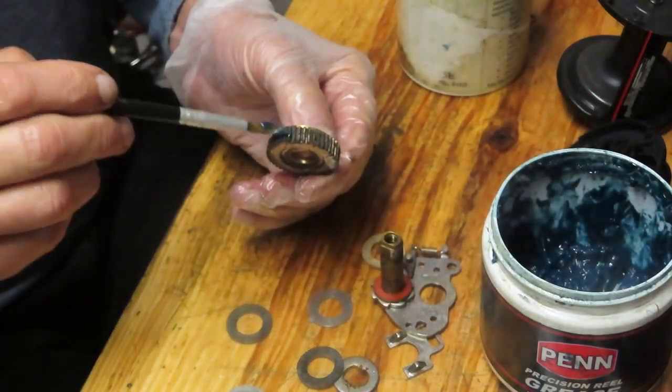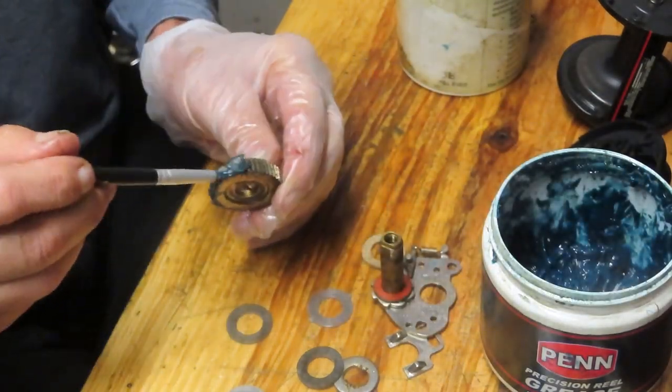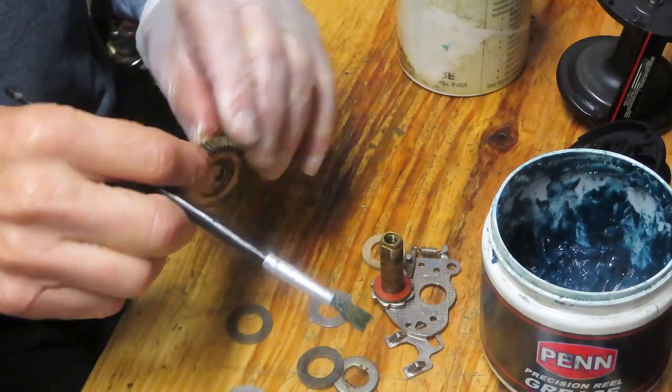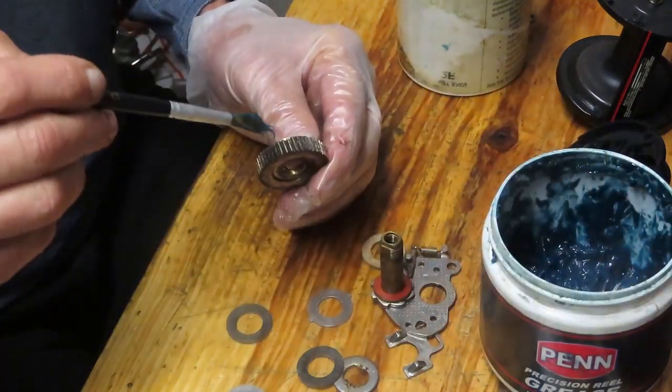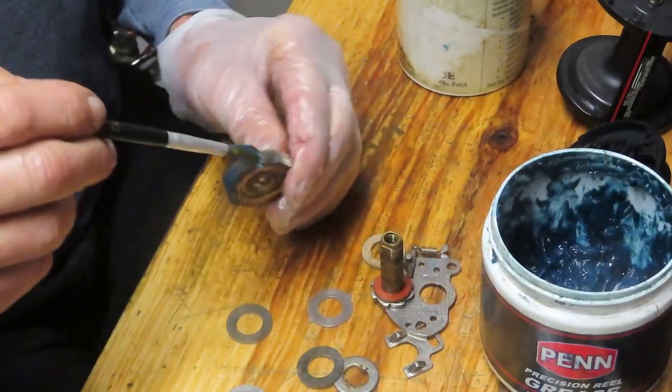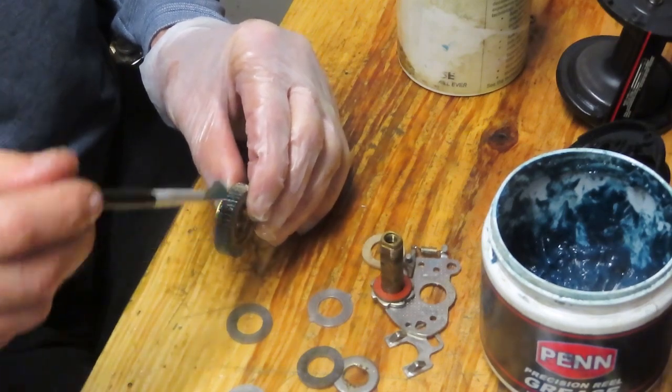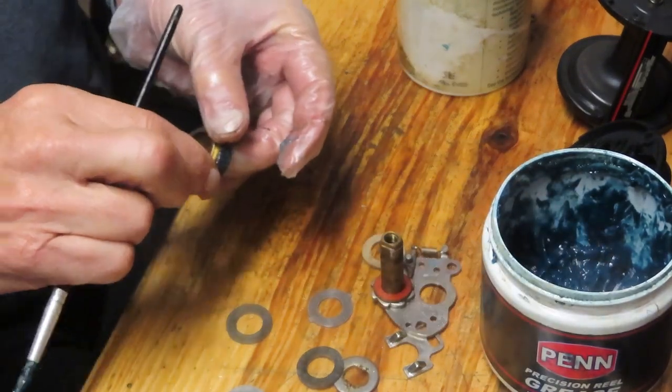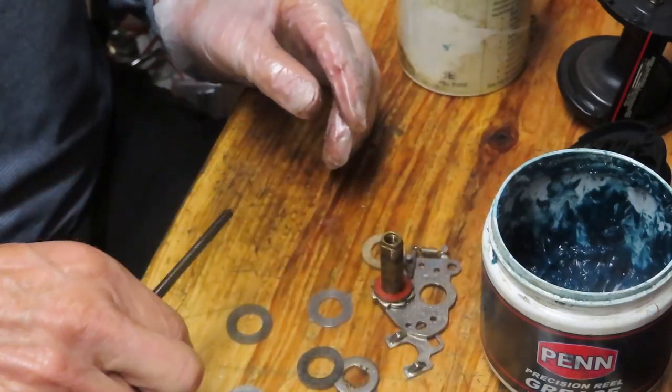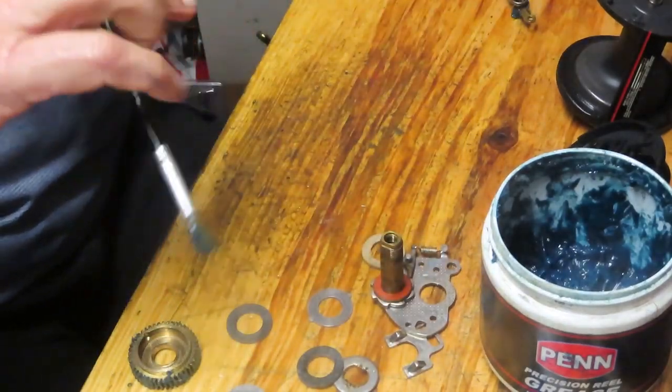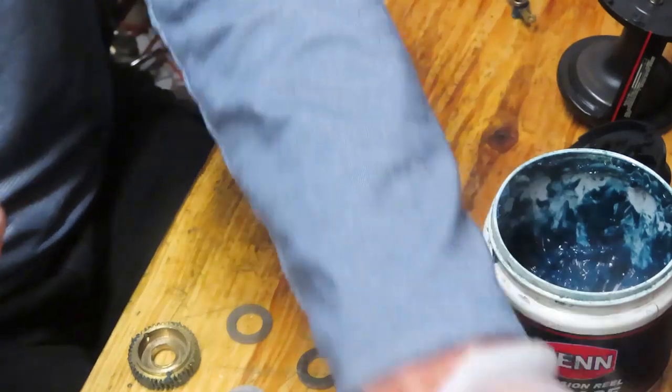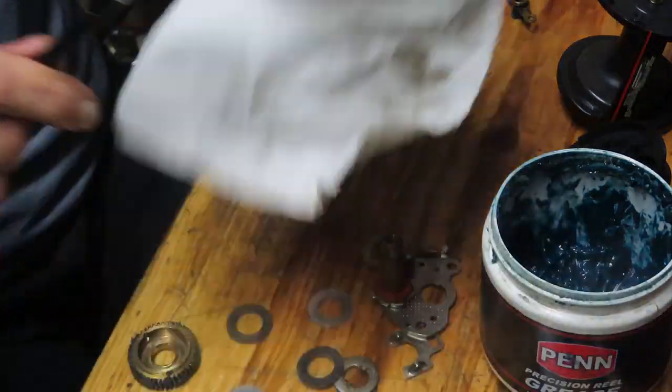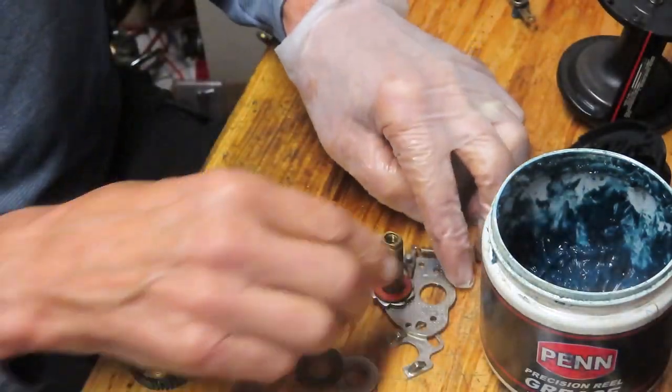I'm going to grab my fishing reel grease. This is Penn Precision Reel Grease. We're going to hit a couple of spots with that grease. Don't worry about getting every tooth. This is going to rotate against the smaller pinion gear. When that happens, it's going to spread it all around. You don't want to put too much in there. It's just going to throw it off.